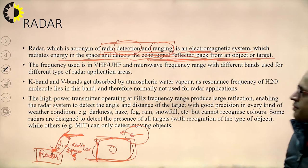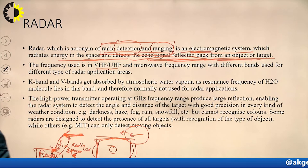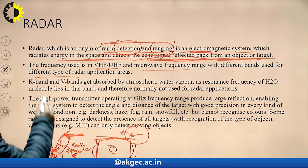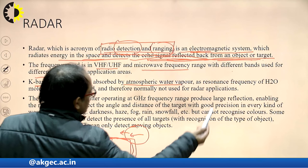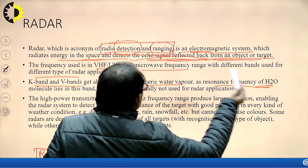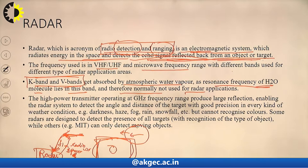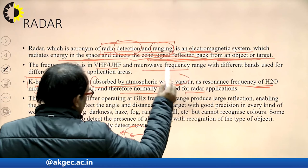The frequency used in radar is VHF (Very High Frequency), UHF (Ultra High Frequency), and microwave frequency, with different bands used for different types of radar applications. Generally, K band and V bands get absorbed by atmospheric water vapors, as the resonance frequency of the H2O molecule lies in this band. Therefore, K band and V band are generally not used for radar applications.